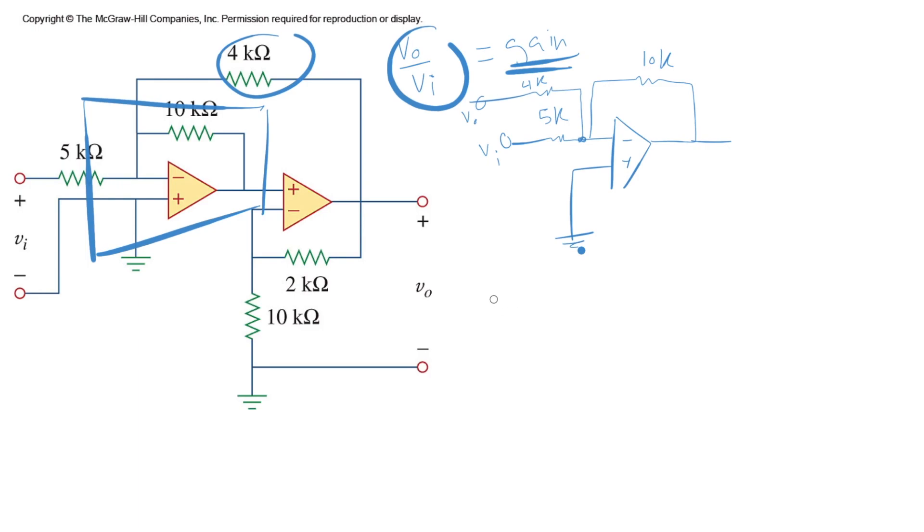And what is the equation for a summing amplifier? It is Vout here. We already have Vout here, so let's call it Vout1. So Vout1 is minus RF over R1 times V1 plus RF over R2 times V2. In this case, what is RF? It is 10k. What is R1? Choose any of those resistors. Let's say 5k.